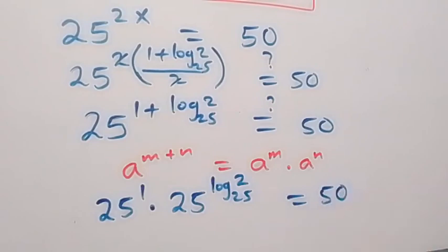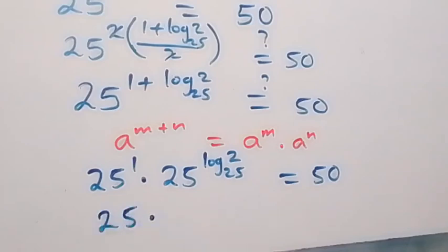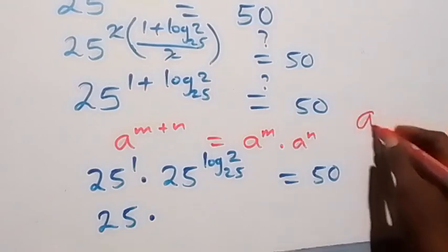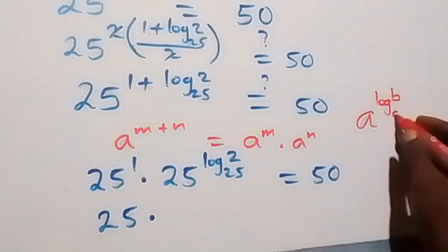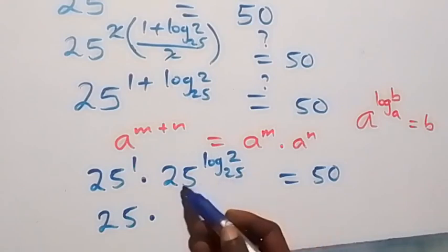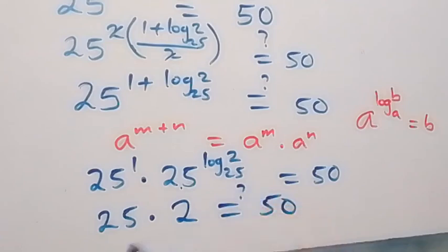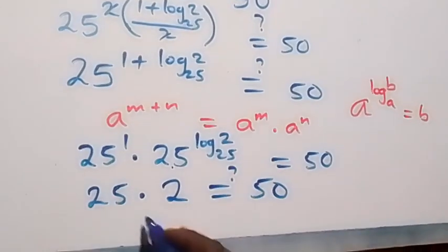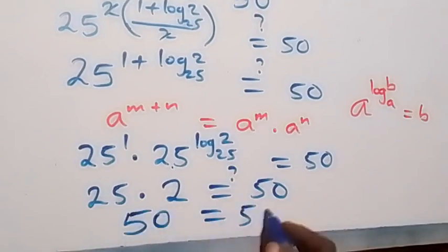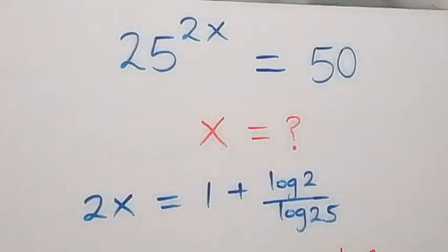If this equals 50 — 25 raised to power 1 is 25. Then from the law of logarithms, A raised to power log B base A simply equals B. Here we have the same base, so this gives times 2. That is 25 times 2 equals 50. The left hand side equals the right hand side, and hence we conclude that the value of x satisfies the given problem.